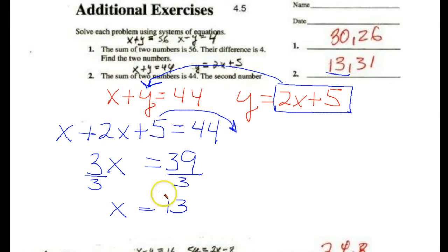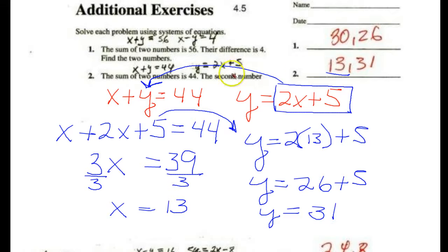Now, since we have a value for x, we can go into this equation where y equals 2 times x, which we say is 13, plus 5. So y equals 26 plus 5. y equals 31. And this is the work you would need to support your answers, indicating you know the needed skills.